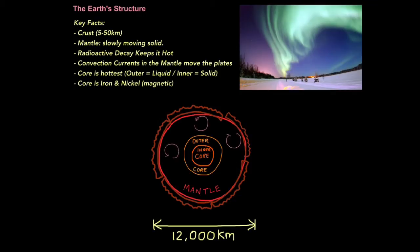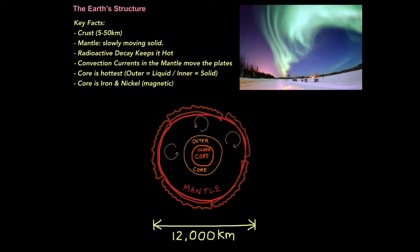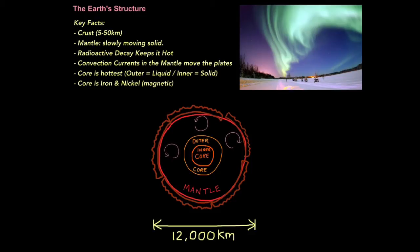When solar radiation can enter closer to the Earth's surface, we see a fantastic display of changing colour. You have to be pretty far north to see this display, commonly referred to as the Northern Lights, but also known as the Aurora Borealis.